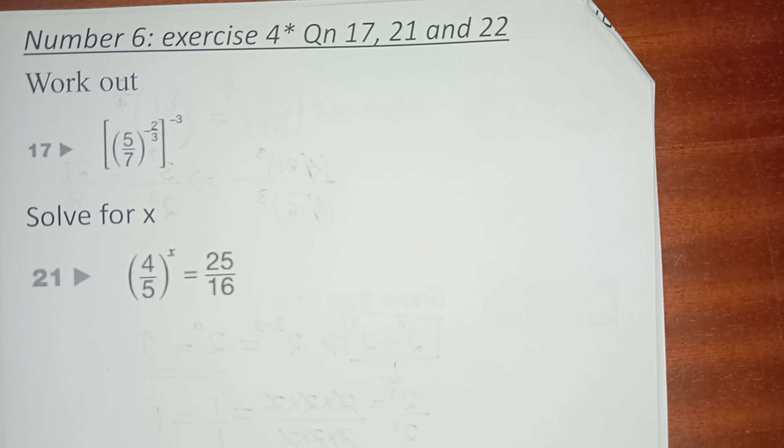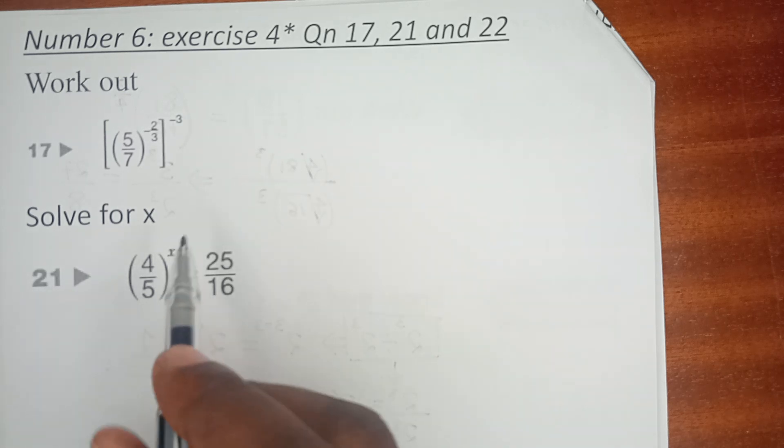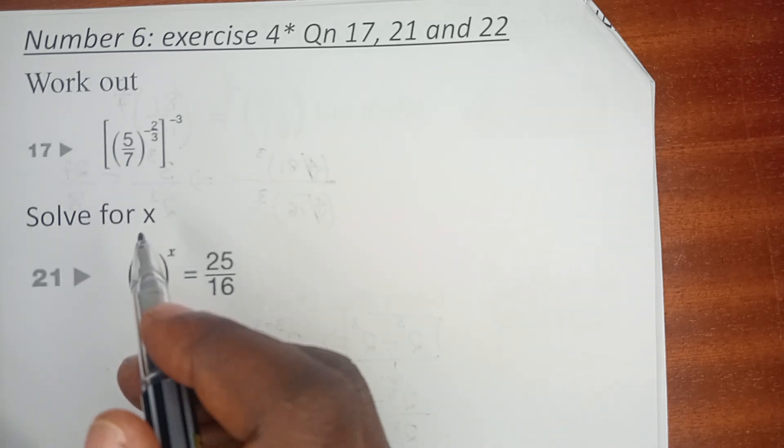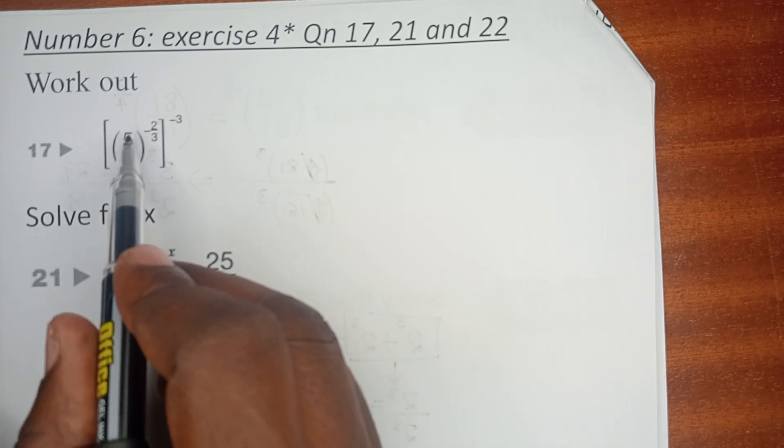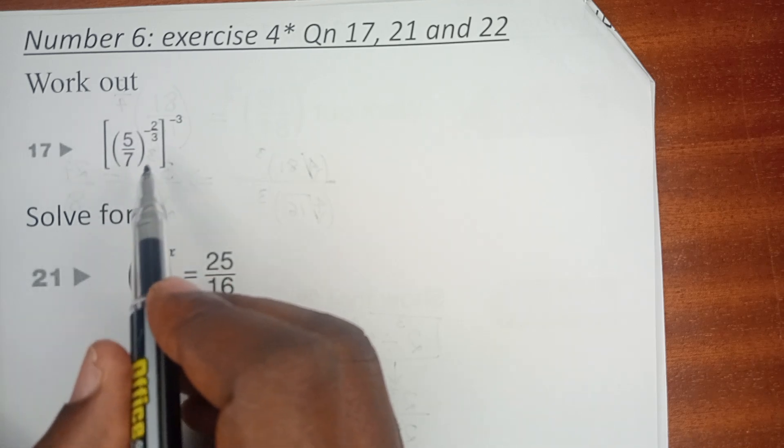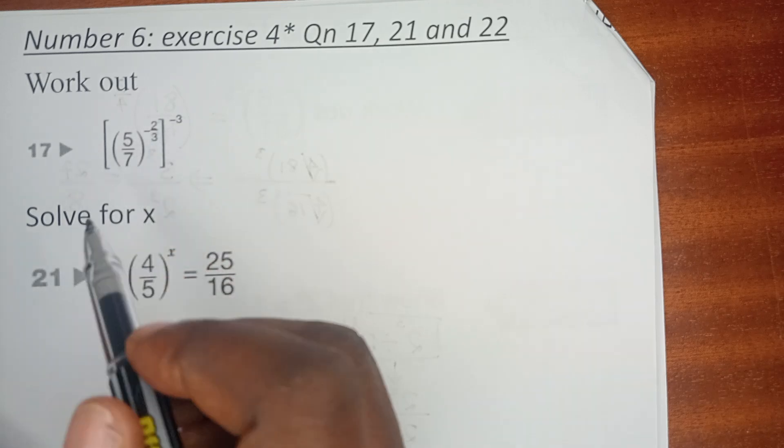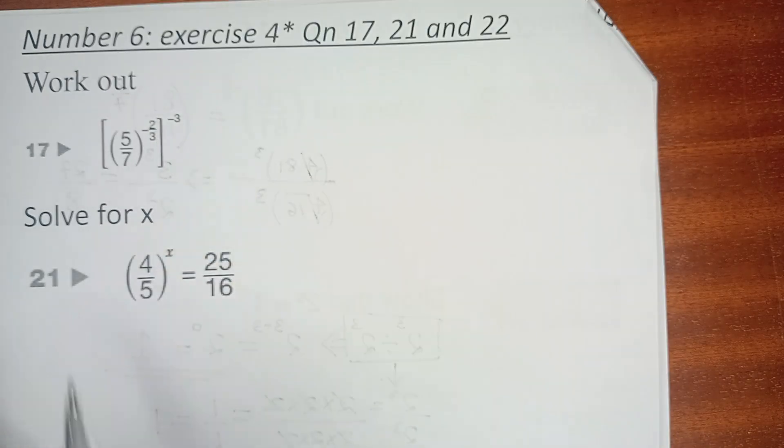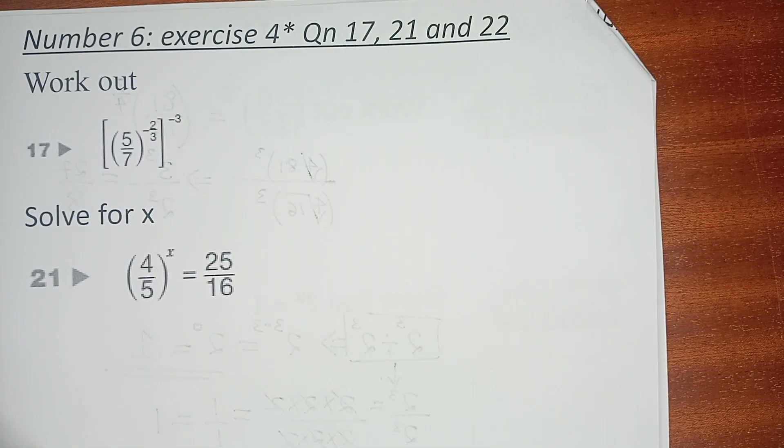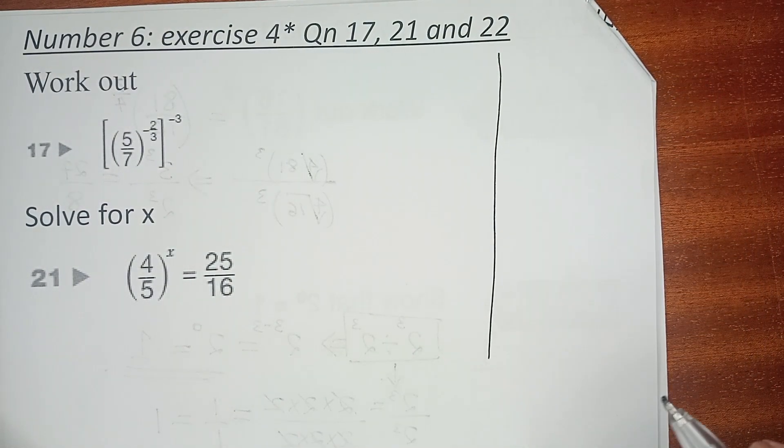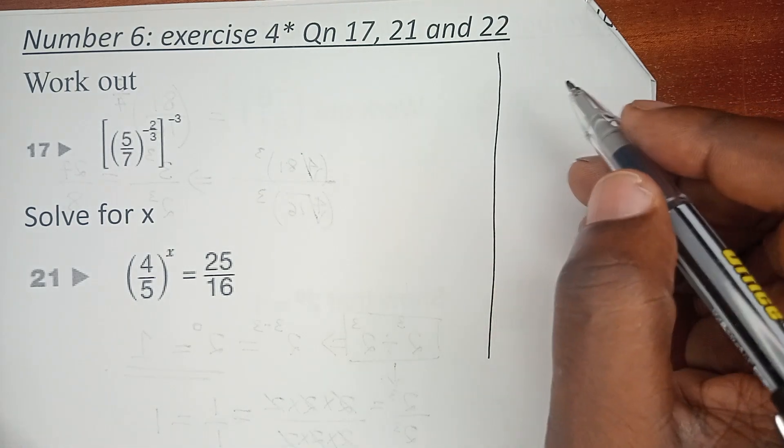In question number 17, we are expected to work out (5/7) raised to power -2/3, upon which it is again raised to power -3. And we have had several laws of indices.